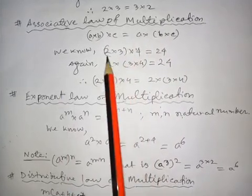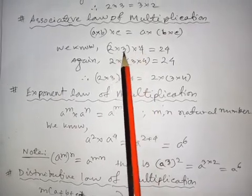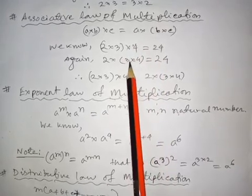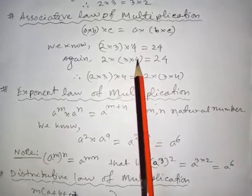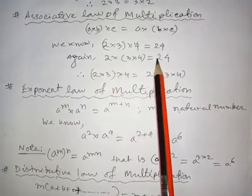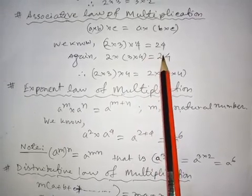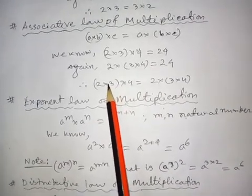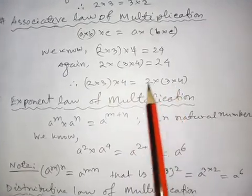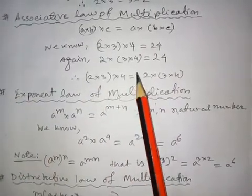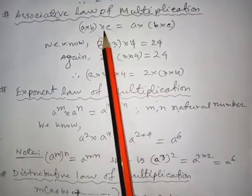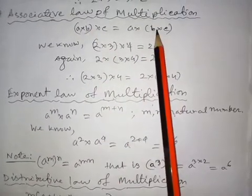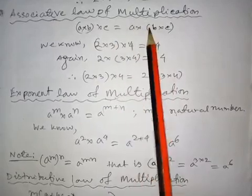Let us take an example: 2 multiplied by 3 multiplied by 4. If we multiply 2 by 3 first, we get 6, then 6 multiplied by 4 equals 24. But if we multiply 3 by 4 first, we get 12, then 12 multiplied by 2 equals 24. In both cases we get the same product, 24. So we can change the way of operation — we can do this part first or that part first — and the result will always be the same.